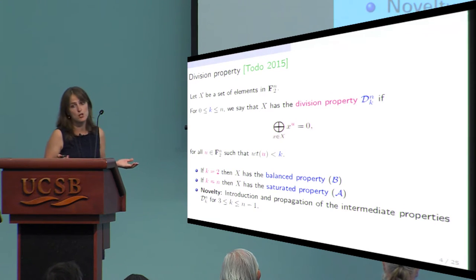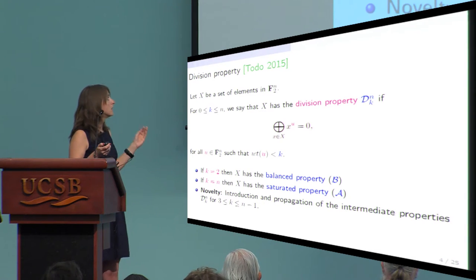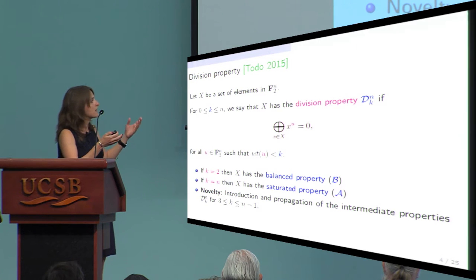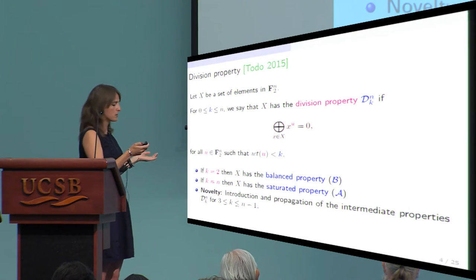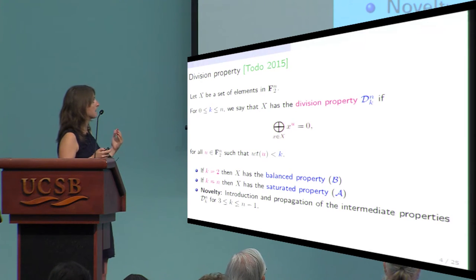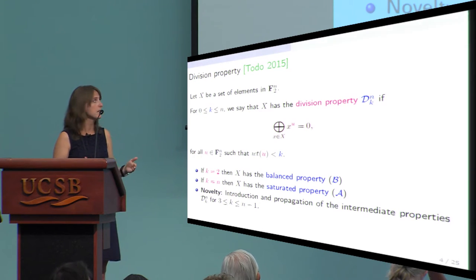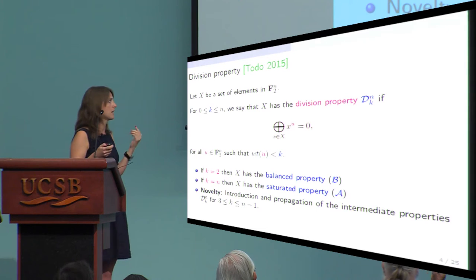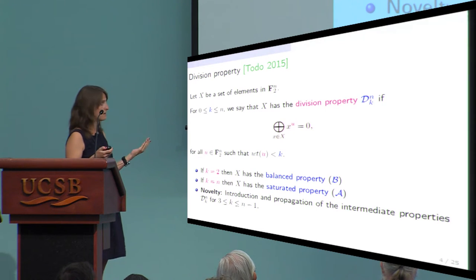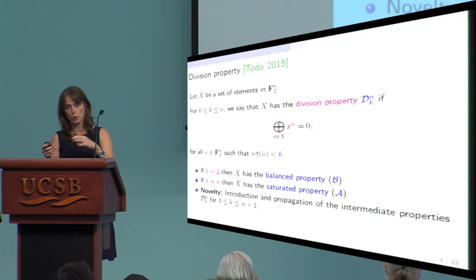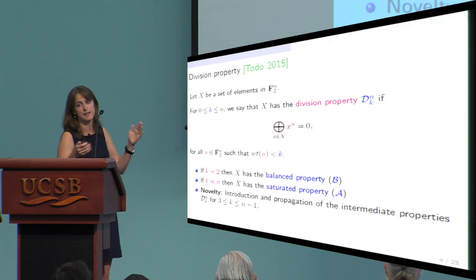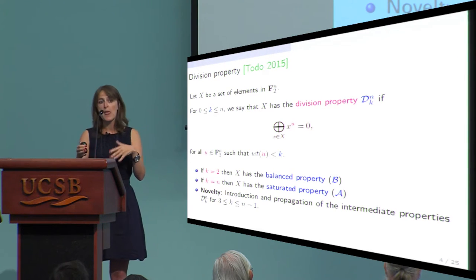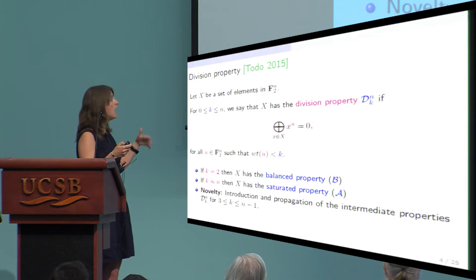The division property is a generalization of integral properties. When k equals 2, a set with division property of order 2 has the balance property. When k is maximal, it has the saturated property, meaning all values in the set are taken exactly once. The novelty is the introduction of intermediate properties for k between 3 and n−1, which we can propagate to construct distinguishers.